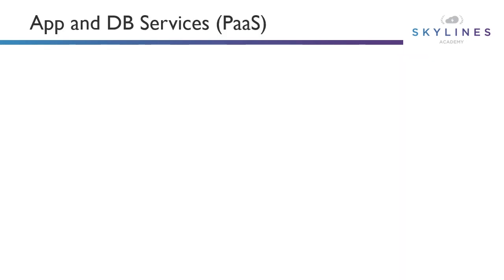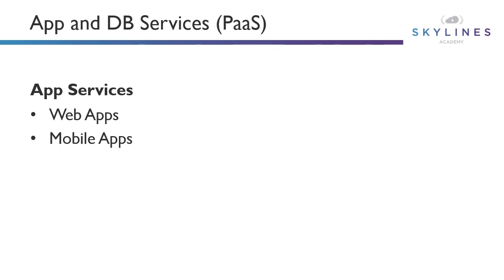In addition to virtual machines and networking, which are the core infrastructure things to know, there's a number of app and DB services — these are the PaaS services we talked about earlier. Under app services, we've got something called Web Apps. This is a PaaS service that allows us to take applications traditionally deployed on IIS — like ASP.NET applications — and run them directly on the Web Apps PaaS service without managing the OS or installing IIS. There's also mobile apps for mobile device backends, as well as serverless functions such as Azure Functions and Logic Apps.